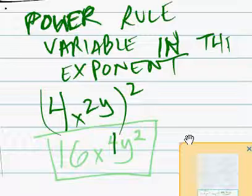Does that become 2 or 4x or 4y to the second? No. It becomes 16x to the fourth, 2 times 2 is 4, y. Simple.